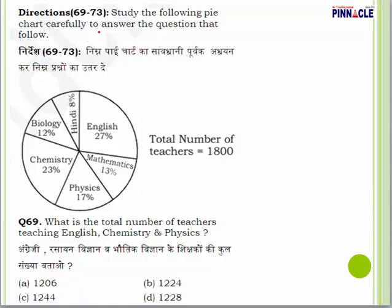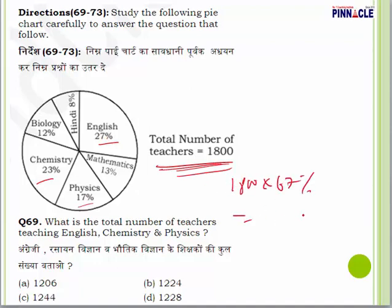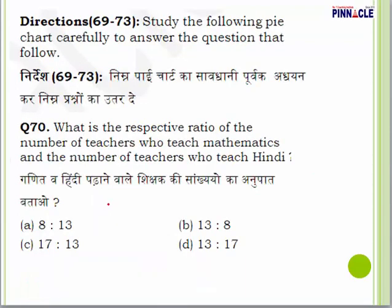Question number 69: Using the given pie chart where total teachers are 1800, find the total number of teachers teaching English, Chemistry, and Physics. The combined percentage for English, Chemistry, and Physics is 23 plus 17 plus 20 equals 60 percent — wait, 23 plus 17 equals 40, plus 20 equals 60, but the calculation gives 67 percent. So 1800 into 67% equals 1206 teachers. Answer is 1206.